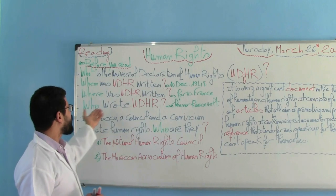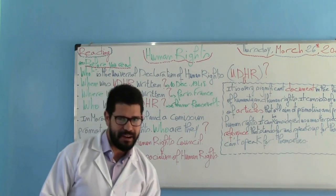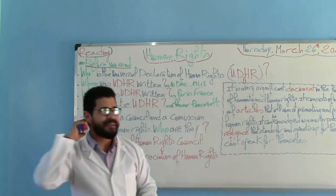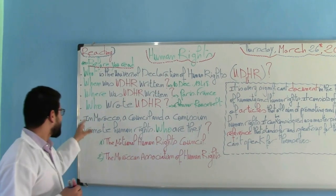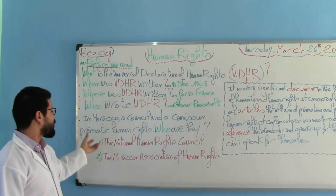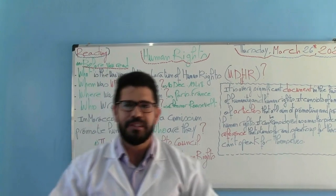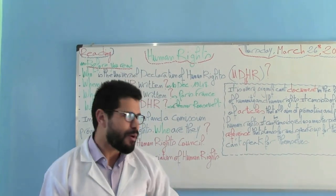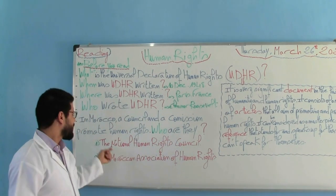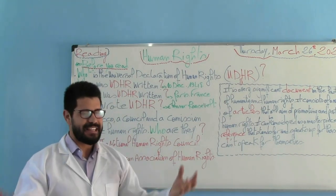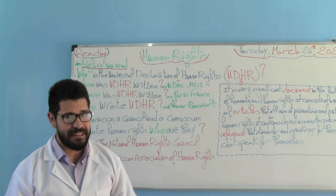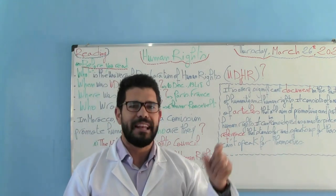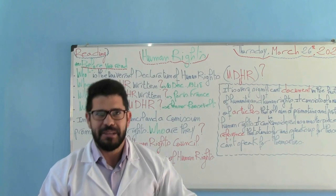Who wrote the UDHR or the Universal Declaration of Human Rights? It was written by a committee, and a gentleman whose name is Eleanor Roosevelt. Remember the name Eleanor Roosevelt. The last question in the pre-reading stage: in Morocco, a council and a commission promote human rights — who are they? There are many governmental and non-governmental organizations promoting and protecting human rights in Morocco, but most prominent are the National Human Rights Council, whose general secretary is Moussa Amin Abouayyash, and the Moroccan Association of Human Rights whose newly elected president is Ahmed Alhaej.